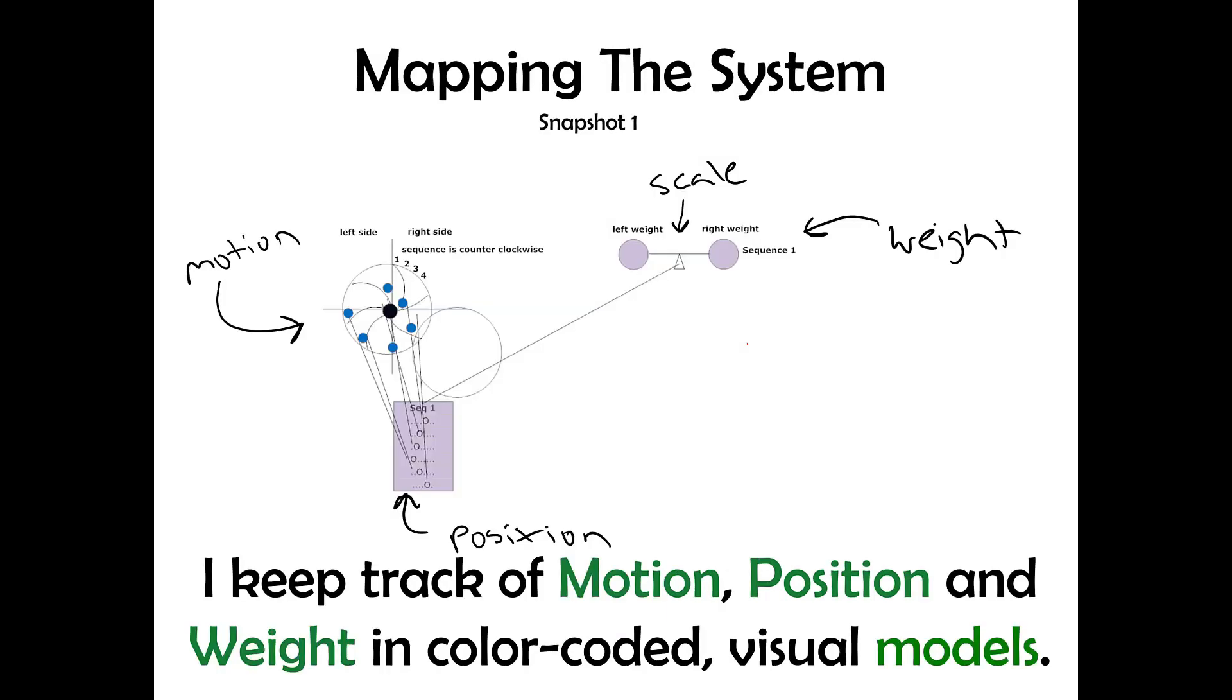I keep track of the motion, position, and weight in color-coded visual models. This is one snapshot in time, snapshot one, showing what you have to imagine is a snapshot of this wheel that's spinning around.